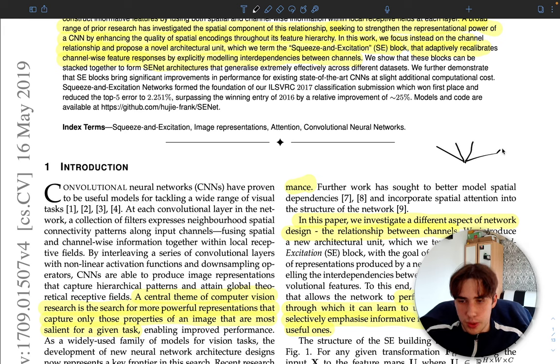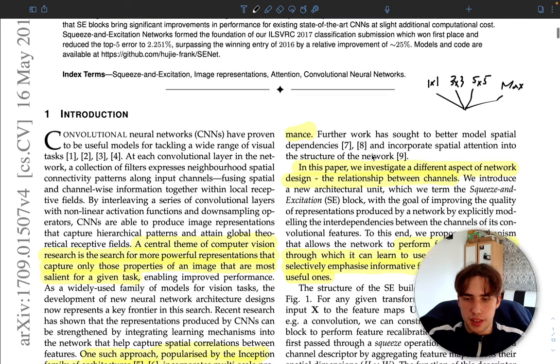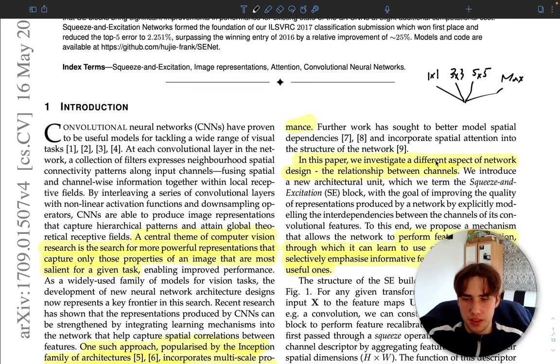into some sort of branches and they use different kernels to extract different features. This is a kind of spatial representation - they use 1x1, 3x3, 5x5, and I guess the last one they use max pooling. That was playing with the spatial representation of the features. In this way they actually improved and got stronger representation without really increasing the computation power. In this paper they investigated a different aspect of network design: the relationship between channels.